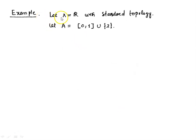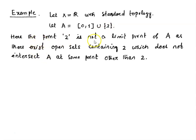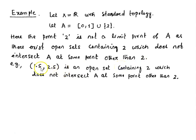Let us take one more example where X = R with standard topology, and let A be the closed interval [0,1] union the singleton set {2}. Here the point 2 is not a limit point of A, as there exist open sets containing 2 which do not intersect A at any point other than 2. For example, the open interval (1.5, 2.5) is an open set in R containing 2, but it does not intersect A at any point other than 2. So this point 2 is not a limit point of A.